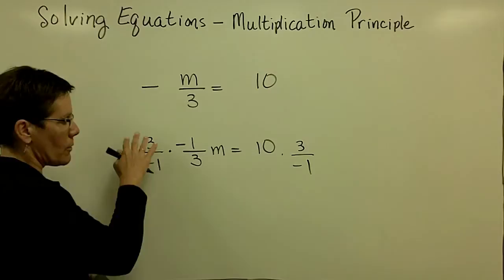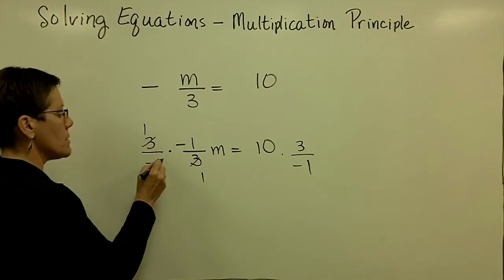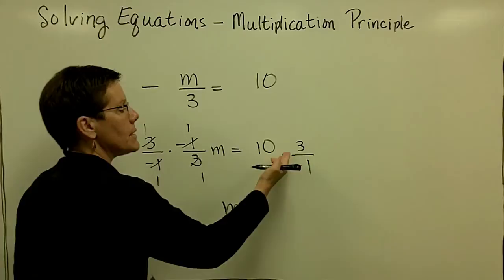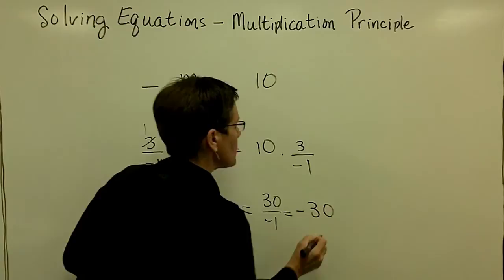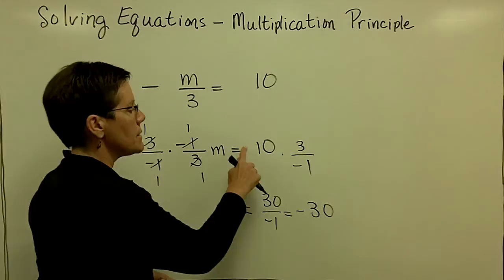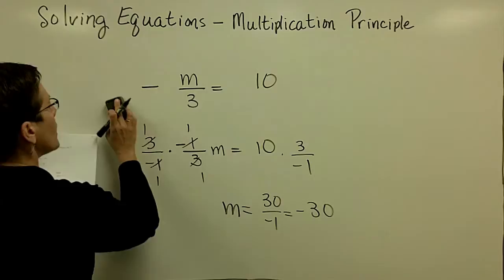So 3 goes into 3 once and into 1 once, negative 1 goes into negative 1 once and into 1 once, so you're left with m. And 10 times 3 is 30, divided by negative 1 is just negative 30. I could have just called that number negative 3, and 10 times negative 3 is negative 30.